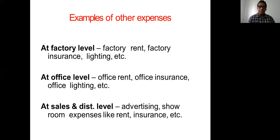Examples of other expenses can arise at various levels. At the factory level you may have factory rent, insurance, and lighting. At the office level there is office rent, office insurance, and office lighting. At the sales and distribution level there may be showroom expenses such as rent and insurance. So these other expenses can be incurred at different levels within the organization.